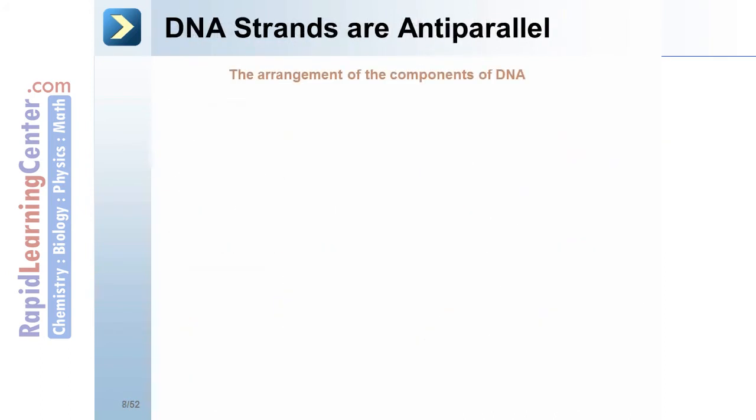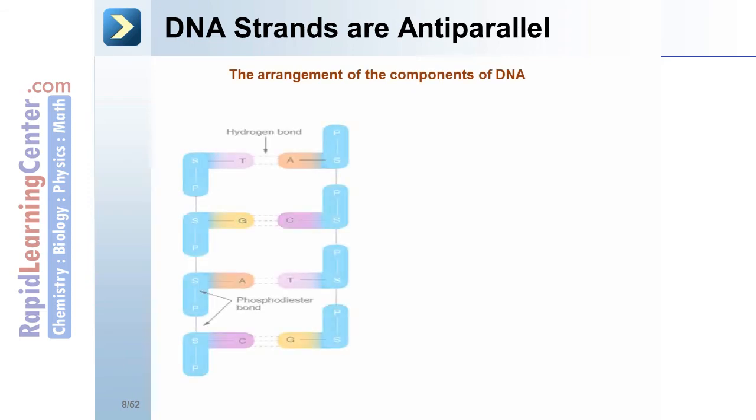DNA strands are anti-parallel. The arrangement of the components of DNA. Notice the hydrogen bonds between the nitrogenous bases. Between adenine and thymine there are two hydrogen bonds. Between guanine and cytosine there are three hydrogen bonds. Also, take a look at the phosphodiester bonds. Remember we just discussed that they are on the backbone and so on the outside of the molecule. The hydrogen bonds, that is the bases, are focused toward the inside of the DNA double helix.